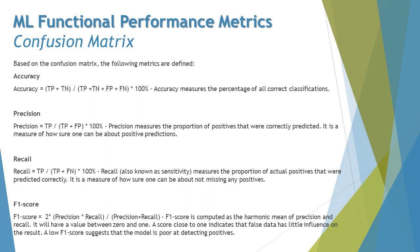Precision measures the proportion of positives that were correctly predicted — it is a measure of how sure one can be about positive predictions. Recall is measured as TP divided by (TP + FN), multiplied by 100. Recall, also known as sensitivity, measures the proportion of actual positives that were predicted correctly. It is a measure of how sure one can be about not missing any positive.